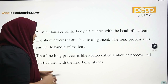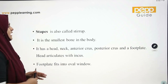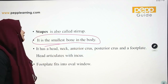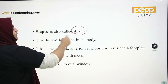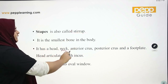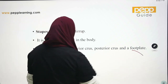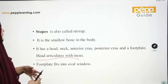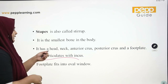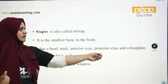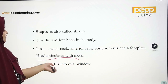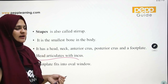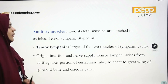The stapes has a head, neck, anterior crus, posterior crus, and a footplate. The head articulates with the incus. The footplate fits into the oval window, which is the boundary between the middle ear and the inner ear.